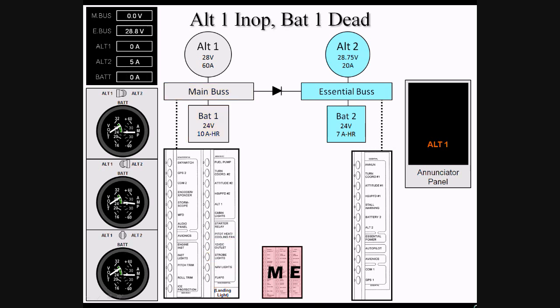If BAT-1 is depleted after an Alt-1 failure, the main bus voltage will drop to zero, and the battery will neither show charge or discharge. At this point, many important items are unpowered, including the MFD, audio panel, engine instruments, manual pitch and roll trim, all ice protection including TKS pump and pitot heat, flaps, and the landing light. This is why load shedding is so important to preserve battery power for landing.